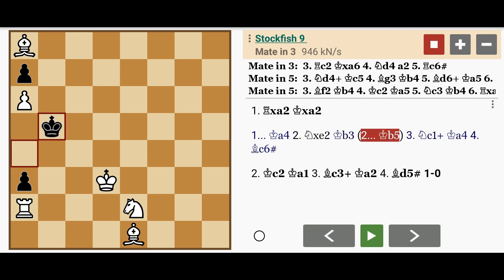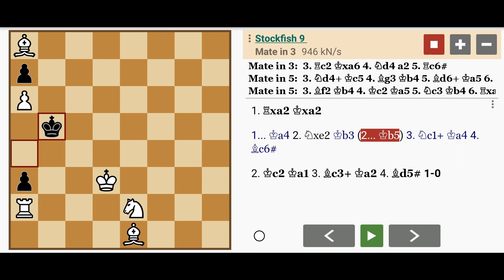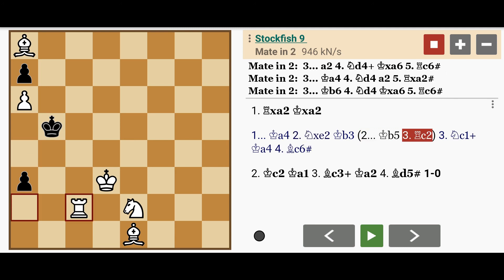So black should play Kb5, and now white plays another quiet move, Rc2. This allows the pawn to move, the pawn on e3.